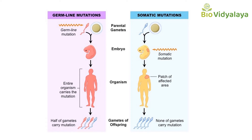Somatic mutations occur in a single body cell and cannot be inherited — that means they cannot be passed from parents to offspring. Only tissue derived from the mutated cell is affected. Most cancers are due to somatic mutations.